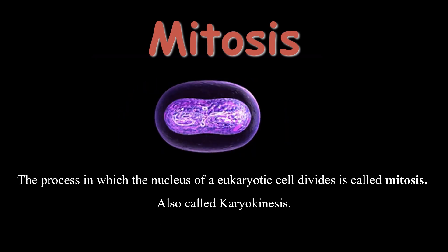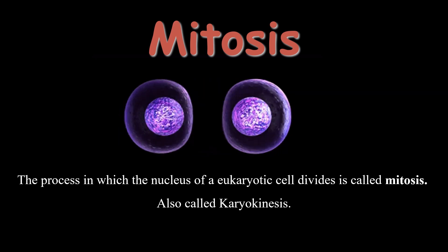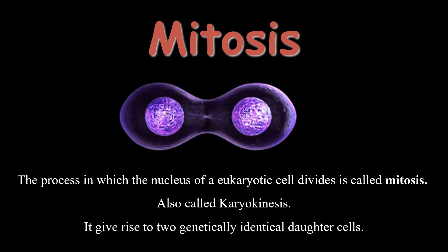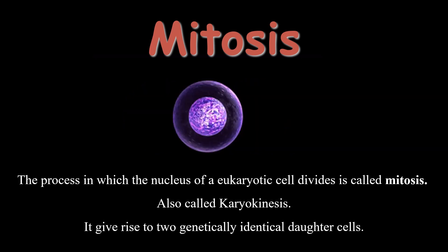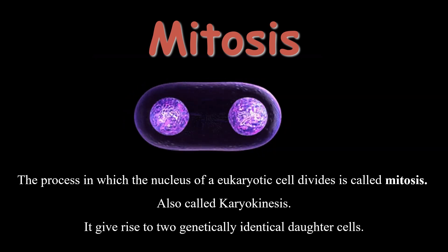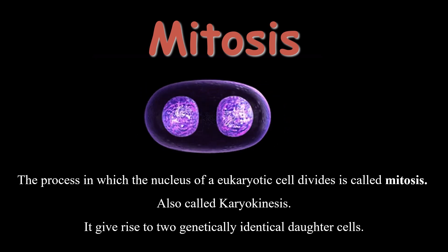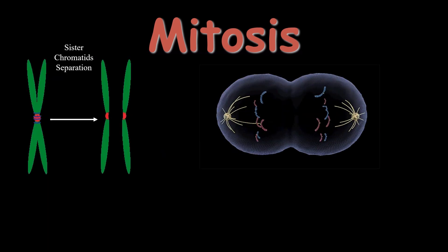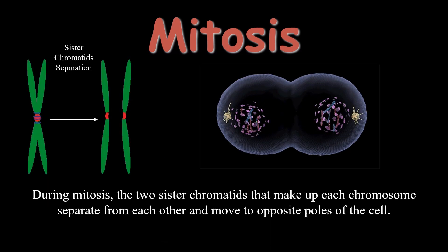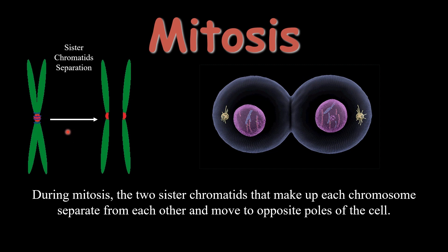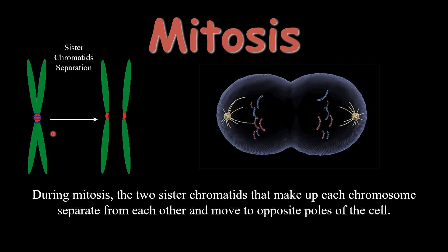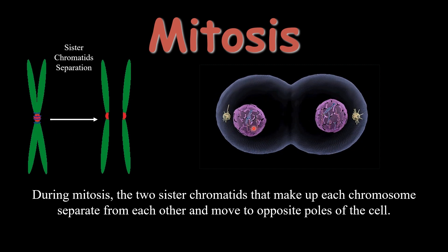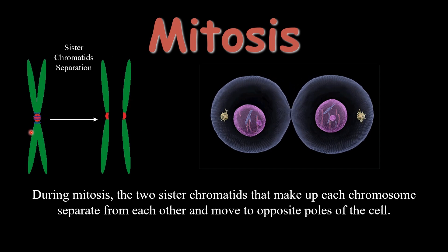In mitosis, the parent cell gives rise to two daughter cells, and these daughter cells are genetically identical to each other. In the process of mitosis, the two sister chromatids that make up each chromosome separate from each other and move toward the opposite poles of the cell.